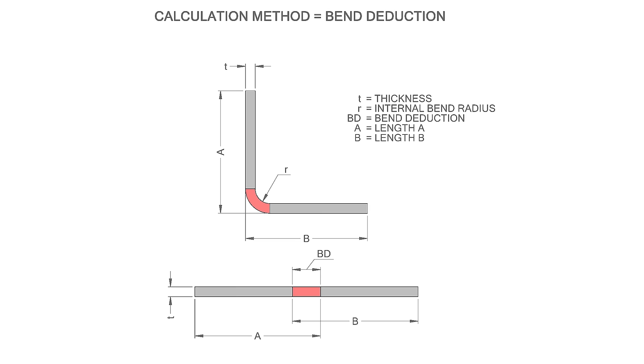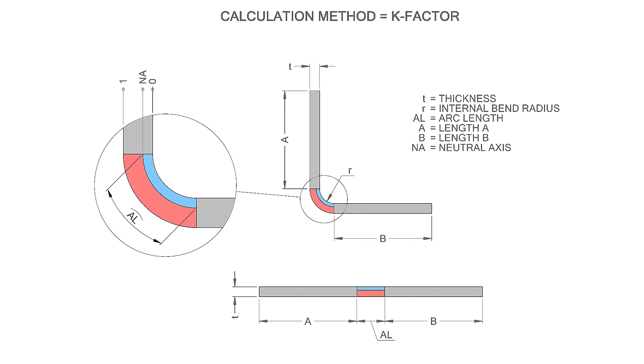In k-factor calculations, we use the sum of the straight lengths A and B, excluding the bend region, then add on the arc length. The arc length is derived from a neutral axis positioned by a user specified value. This is a unitless value between 0 and 1. 0 positions the arc on the internal surface of the bend, and 1 positions the arc on the external surface of the bend.